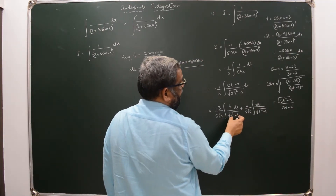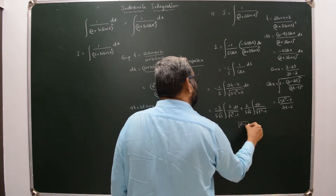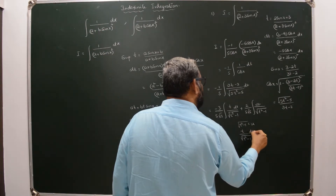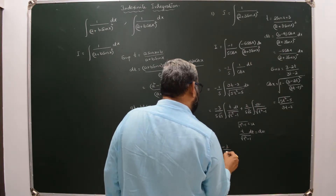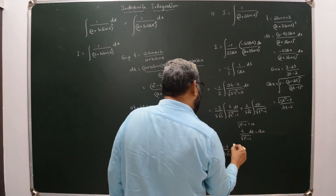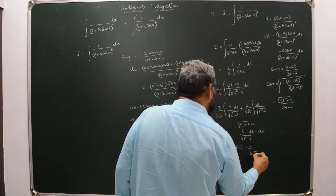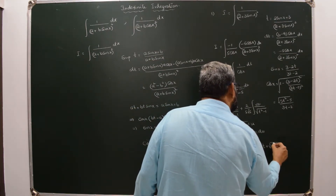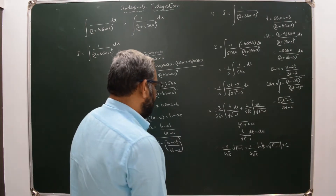Here, note that the derivative of √(t² - 1) gives t/√(t² - 1). Let u = √(t² - 1). So the integral becomes: -3/(5√5) · u + 2/(5√5) · ∫(1/√(t² - 1)) dt, and the second integral is log(t + √(t² - 1)) + C.